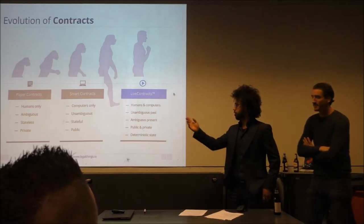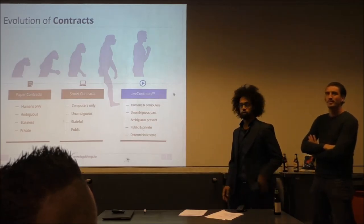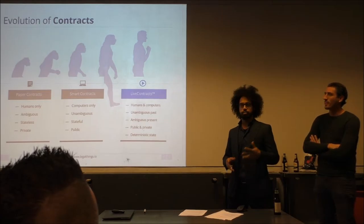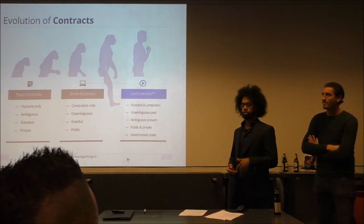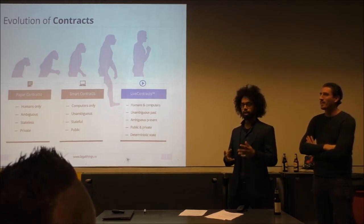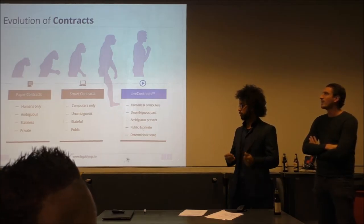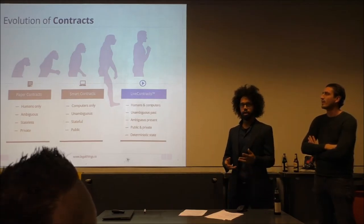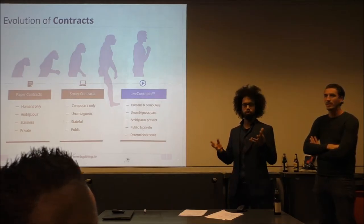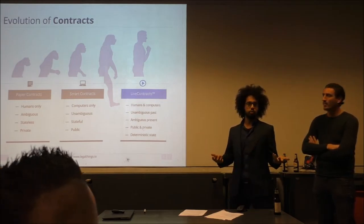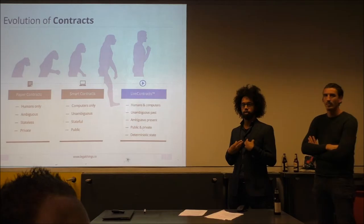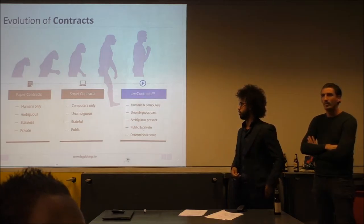Let's talk about these three types of contracts. First of all, we've got paper contracts. Everybody knows they're just text written for humans. The rules in there are ambiguous, so you can discuss them, agree or disagree. The whole contract is stateless — it's just the rules that are defined. And of course it's private. You've got a copy, I've got a copy. That's it. Nobody else needs to know.